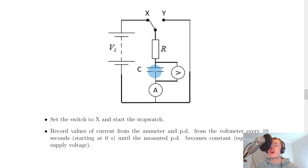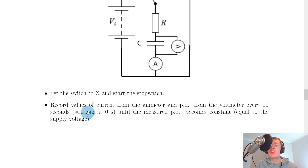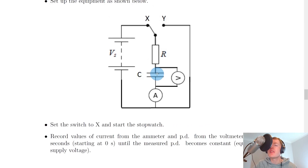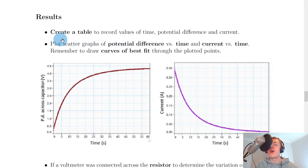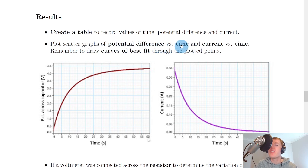Once the capacitor starts charging, start the stopwatch and record values of current from the ammeter and potential difference from the voltmeter every 10 seconds, starting at 0 seconds, until the measured potential difference becomes constant. This happens when the potential difference across the capacitor equals the supply voltage. Beforehand, create a table to record values of time, potential difference, and current. Then plot scatter graphs for potential difference across the capacitor versus time, and current in the circuit versus time, drawing curves of best fit through the plotted points.